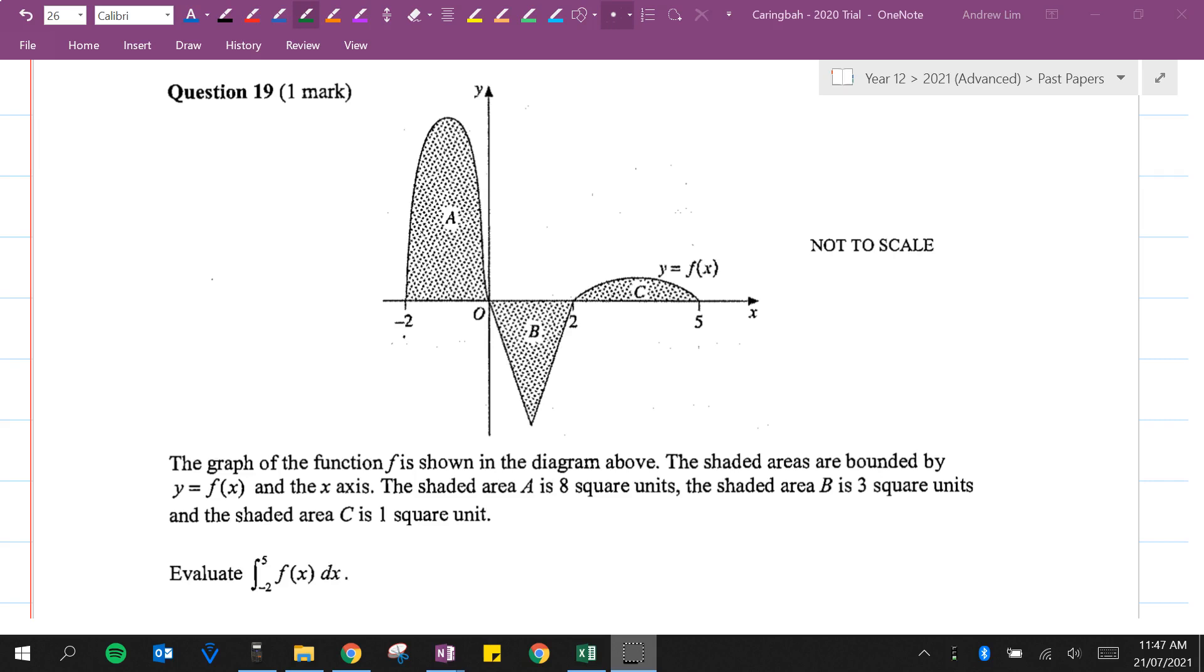The shaded area A is 8 square units. The shaded area B is 3 square units. And the shaded area C is 1 square unit.